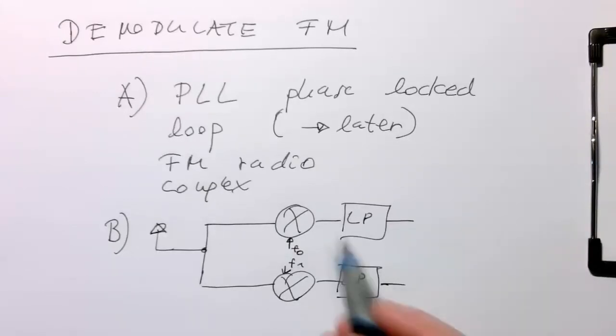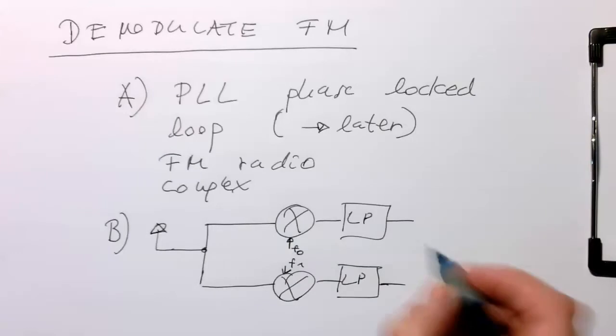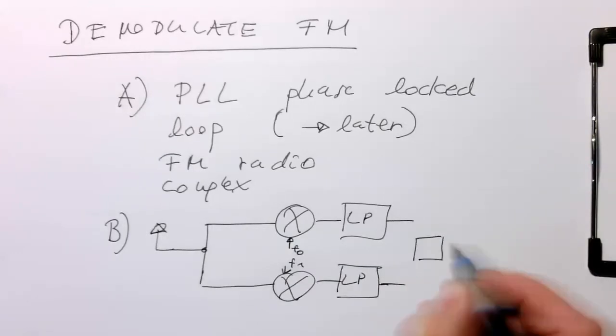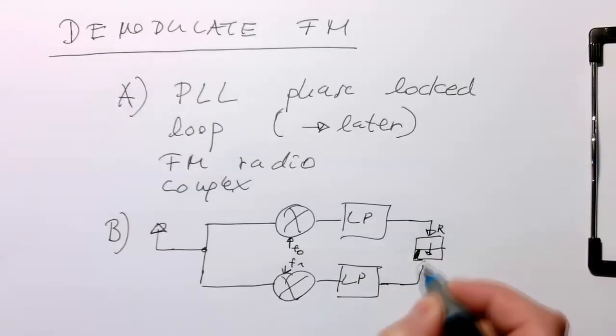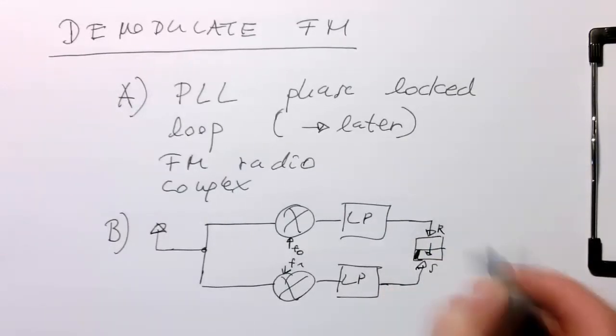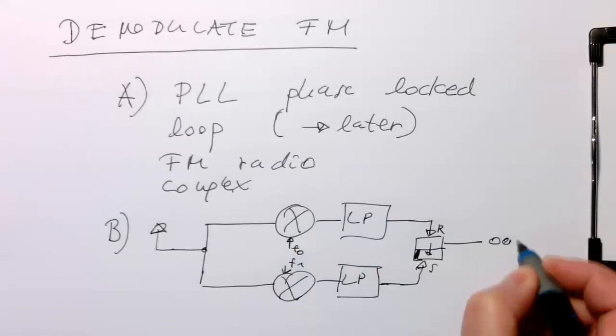If a zero is transmitted, this one will go up. If a one is transmitted, this will go up. So we could have a set-reset flip-flop here. This resets the flip-flop, this sets the flip-flop, and then we're sending the output out and getting our bitstream.